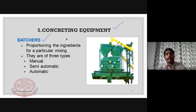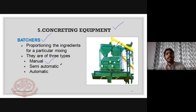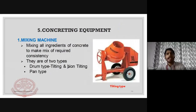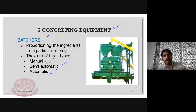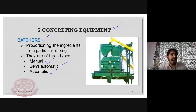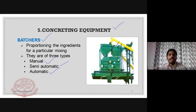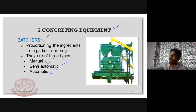Concrete batching is an important concrete equipment category. Batching means proportioning materials in specific quantities. There are three types of batching: manual, semi-automatic, and automatic. In automatic batching, the weight is checked automatically and materials are measured automatically.